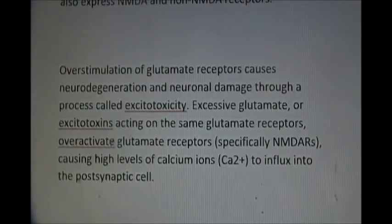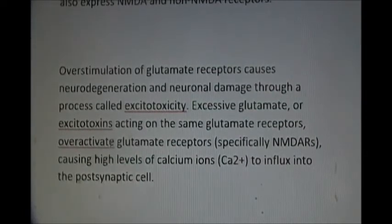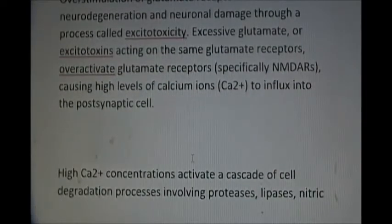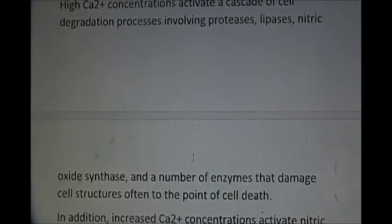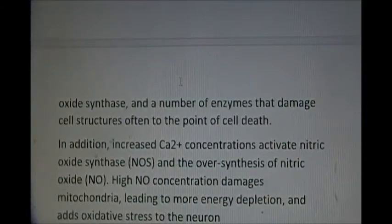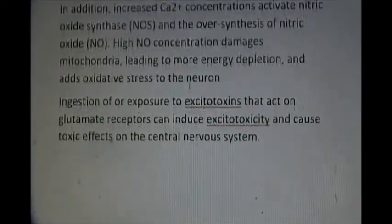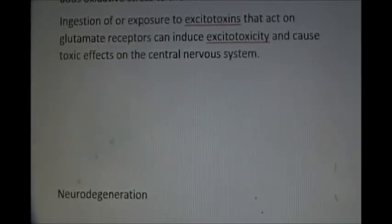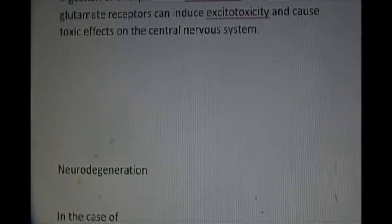Excitotoxicity caused by glutamate is the overstimulation by glutamate that causes cell death. The calcium ion influx causes long-term potentiation which leads to overstimulation and cell death. High calcium concentrations activate a cascade of cell degradation processes. Nitric oxide synthase increases nitric oxide, and high nitric oxide concentrations damage mitochondria. If the mitochondria are damaged, energy production is depleted, leading to oxidative stress to the neuron.